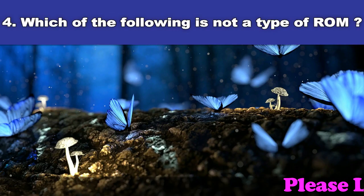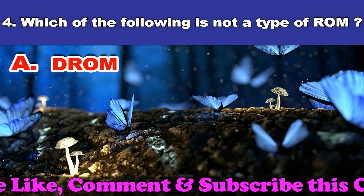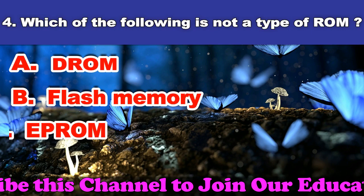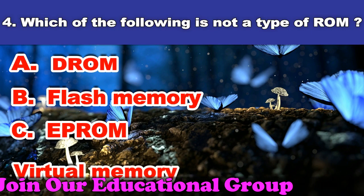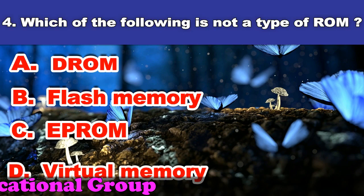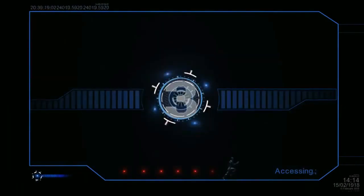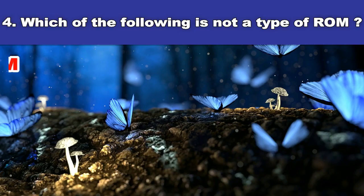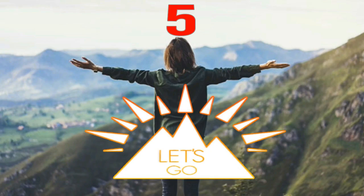Fourth question: Which of the following is not a type of ROM? A. DROM. B. Flash memory. C. EPROM. D. Virtual memory. And the answer is DROM.